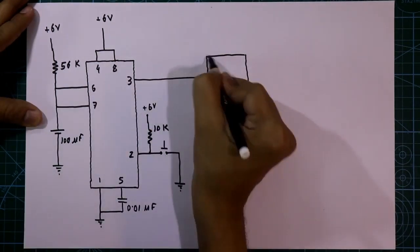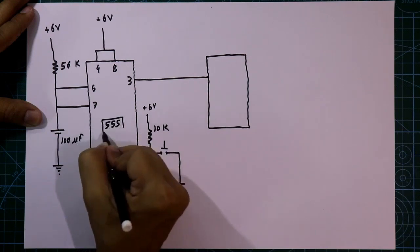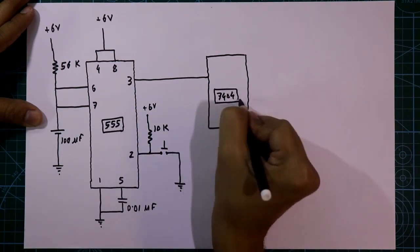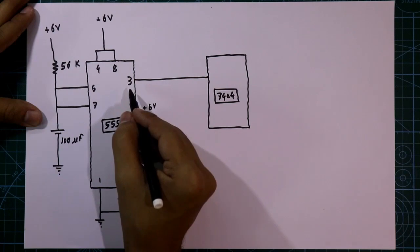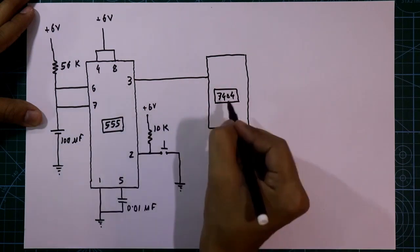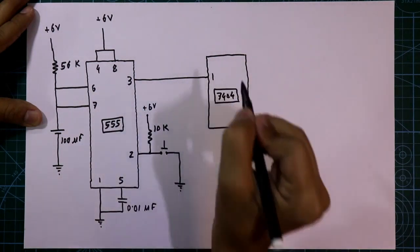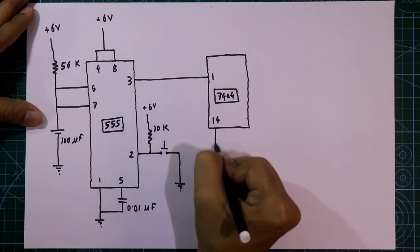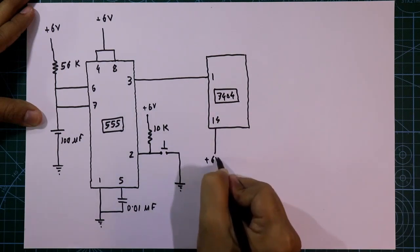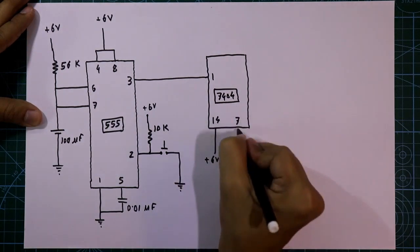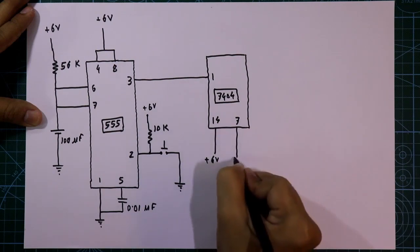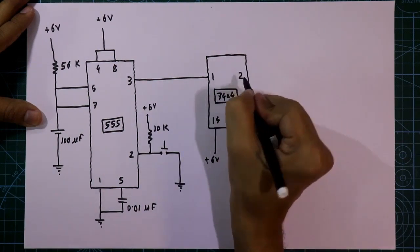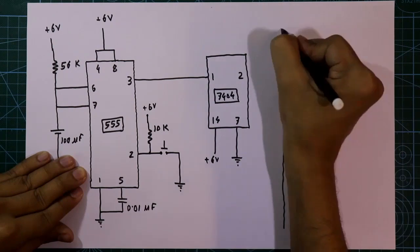Now come to pin number 3. This is the 555 timer IC, and this IC is 7404. Pin number 3 of the 555 timer IC is connected to pin number 1 of 7404. Pin number 14 of 7404 is connected to plus 6 volt, then pin number 7 is connected to ground. Here is its pin number 2.